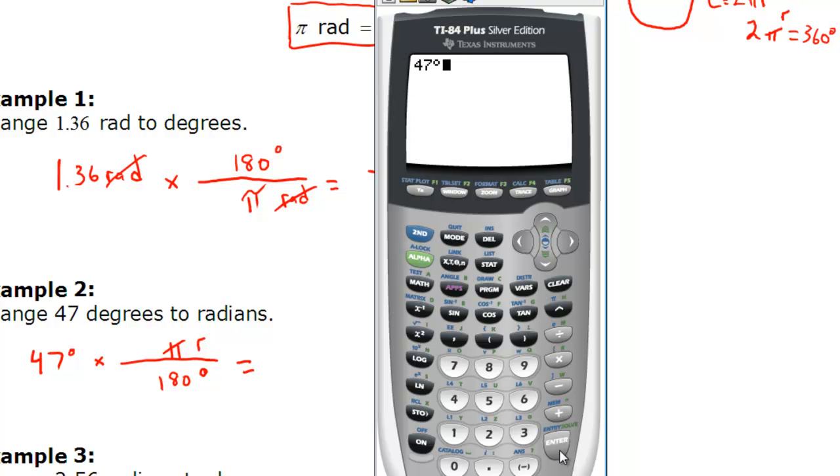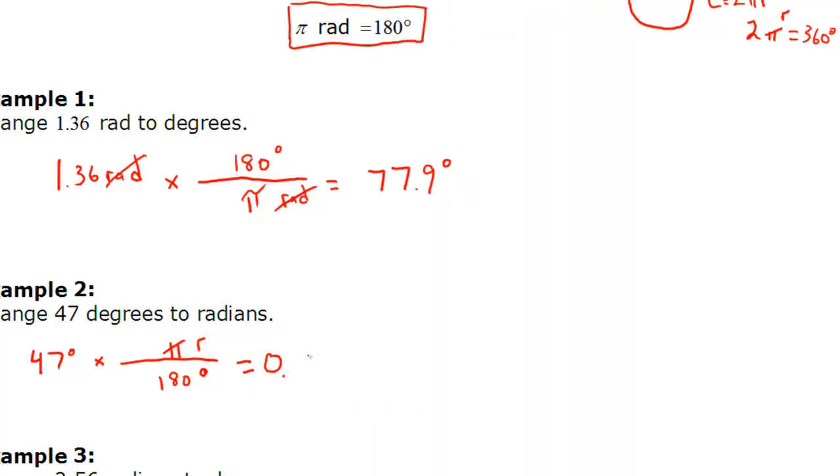So we're going to tell the calculator we have 47 degrees. And we're just going to hit enter, and that tells us that there's 0.8203, etc., radians in 47 degrees. If we check our answer just with the conversion we have there, 47 times π, which is above the exponent button here, and divide that by 180, we see that the result is exactly the same. So 0.8203.